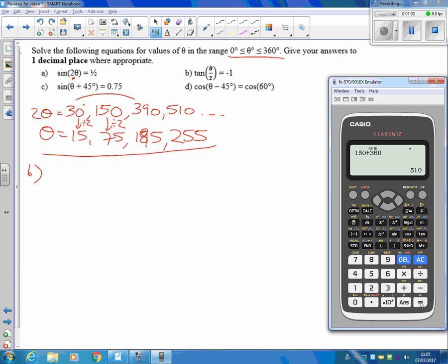For part B, I need to do an inverse tan of minus 1. The inverse tan of minus 1 gives me minus 45. How annoying. But add 180 to that to get a positive answer, gets me 135. If I did add 180 to that again, I could get the answer after, 315.